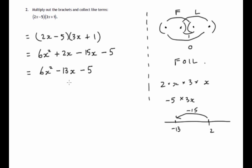That's collected the like terms, the x terms in the middle there. That's your final answer. 6x squared minus 13x minus 5.